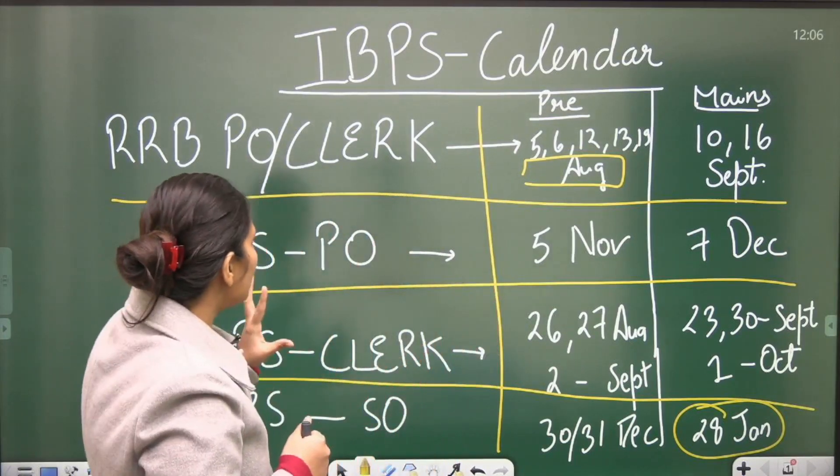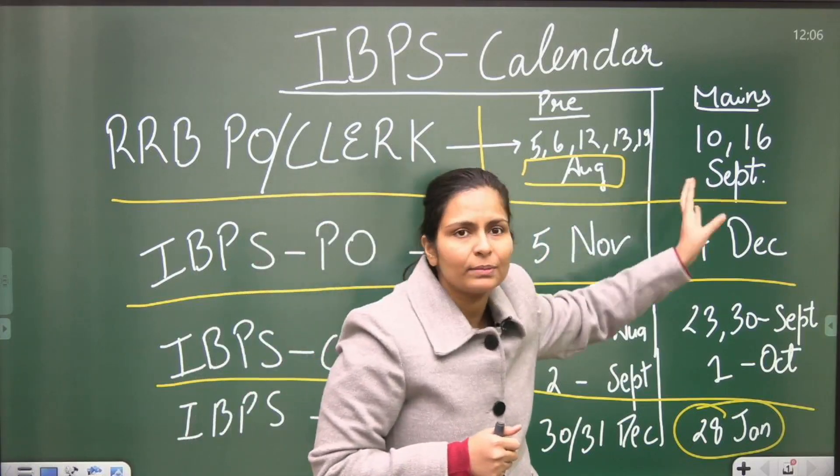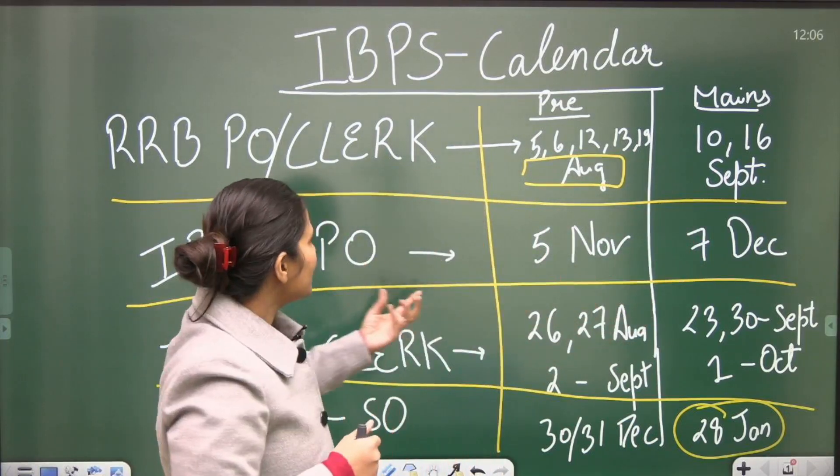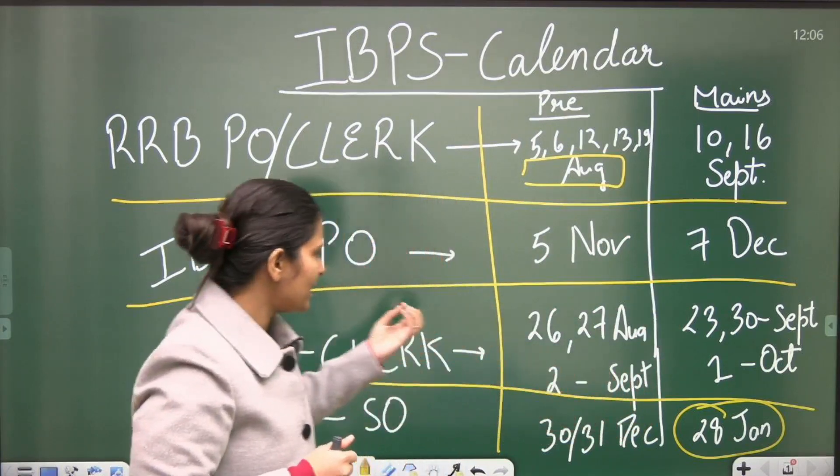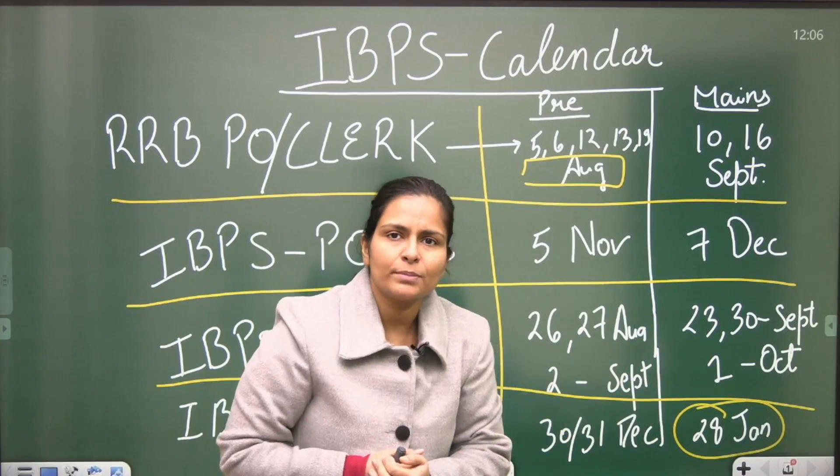If I talk about specific dates, RRB PO and CLERK will be prelims in August, mains in September. IBPS PO is prelims in November, mains in December. SO will be prelims in August, September.